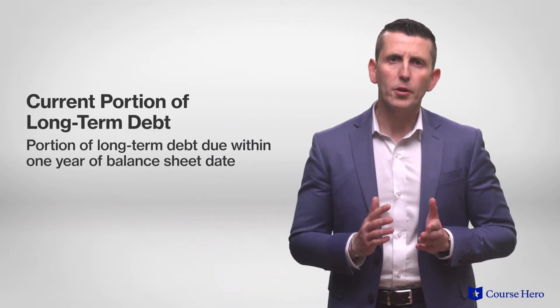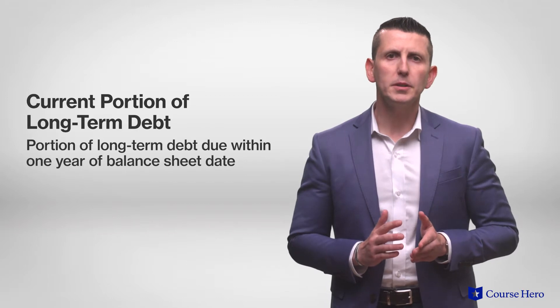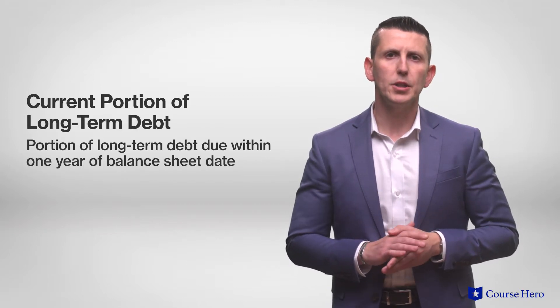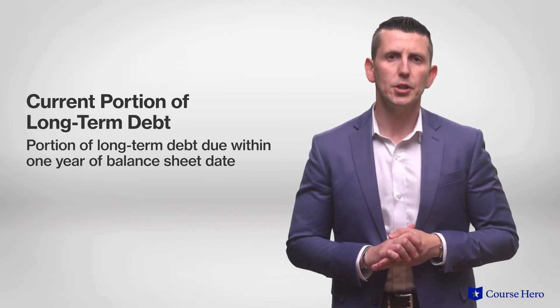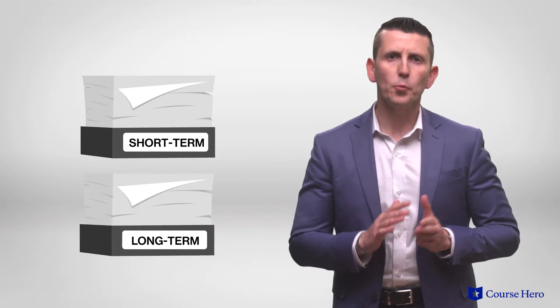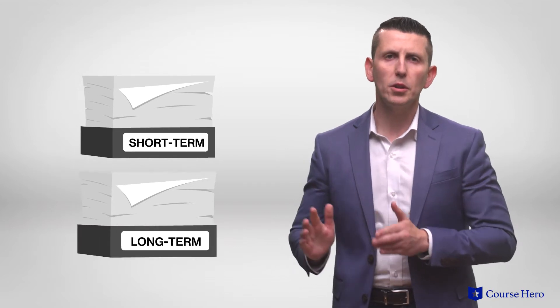Therefore, the current portion of long-term debt is that portion of long-term debt due within one year of the balance sheet date, and it is reported under current liabilities on the balance sheet. The remainder of the obligation or debt continues to be classified as a long-term liability. This distinction tells whoever reviews the company's financial statements what amount is due in the short term and what amount is due in the long term.